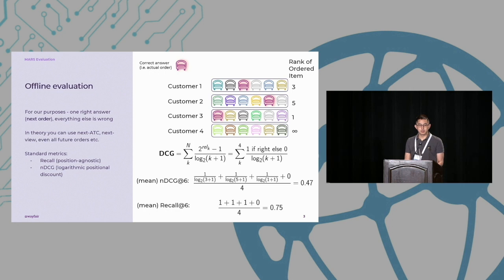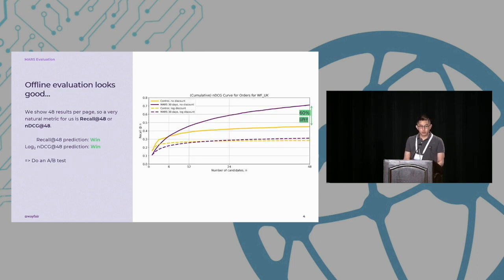Below I also show the recall calculation, and another way to think of this is basically just NDCG with no positional discount. So recall and NDCG are both very common standard metrics to use for evaluation. And at Wayfair, we show 48 items per page, so it's very natural for us to use a recall or NDCG at 48 to do our offline evaluation. And here you can see the offline evaluation results for one of our models for our Wayfair UK store. You can see a big lift for both metrics at position 48, so you would think we should go ahead and do an A-B test.